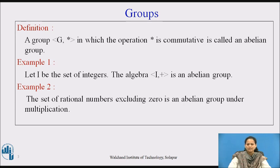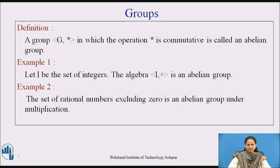Another example: the set of rational numbers excluding 0 is an abelian group under multiplication. The explanation is left to the students, as we have done it for the earlier example.